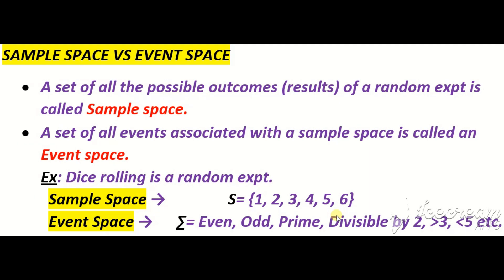ایک اور example جو میں اکثر students کو دیتا ہوں: یہ جو life ہوتی ہے، یہ بھی ایک قسم کی sample space ہے۔ جب آپ زندگی گزارتے ہیں تو مختلف قسم کی events سامنے آتی ہیں — achievement بھی ملتی ہے، frustration بھی، deaths بھی ہوتی ہیں، بیماری بھی ہوتی ہے، depression بھی ہوتا ہے، خوشی بھی ہوتی ہے۔ تو life بھی different events کا مجموعہ ہے۔ اسی طرح ایک sample space کے اندر مختلف events define کر سکتے ہیں۔